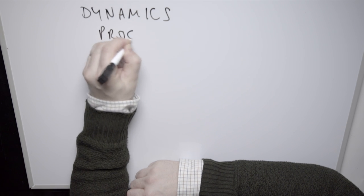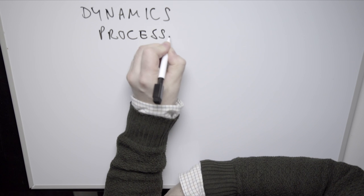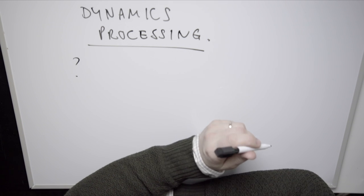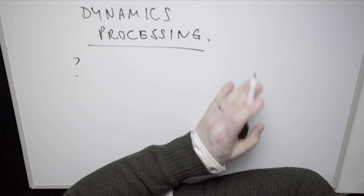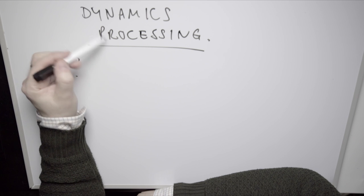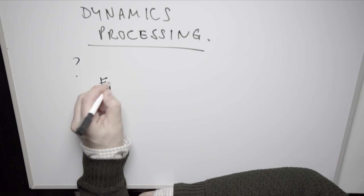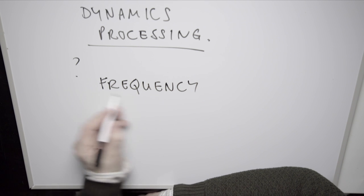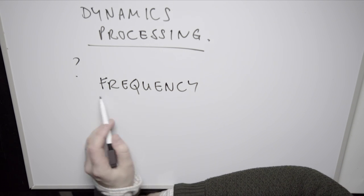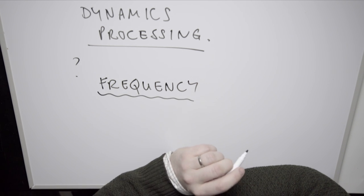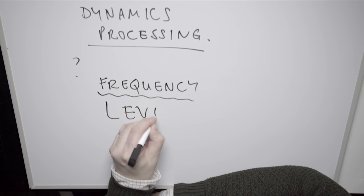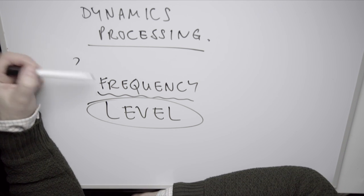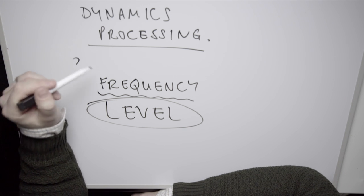Dynamics processing — what is it? Something that students often get mistaken with is when they talk about dynamics processing, they often talk about frequency. Yes, you can get frequency-dependent dynamics processes, but when most people talk about frequency in the context of dynamics processing, they actually mean level. I've marked countless exam papers on this topic and it always amazed me how many people talk about frequency but don't mean frequency.